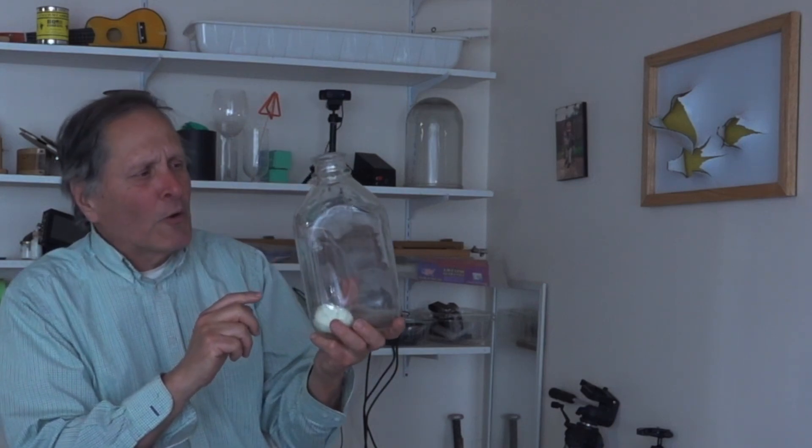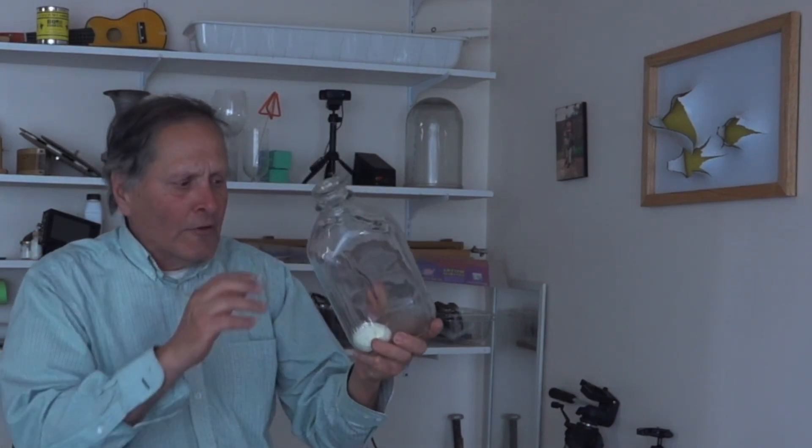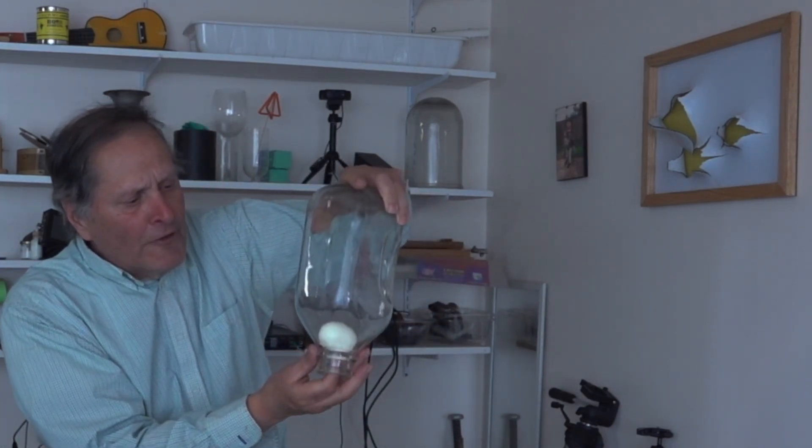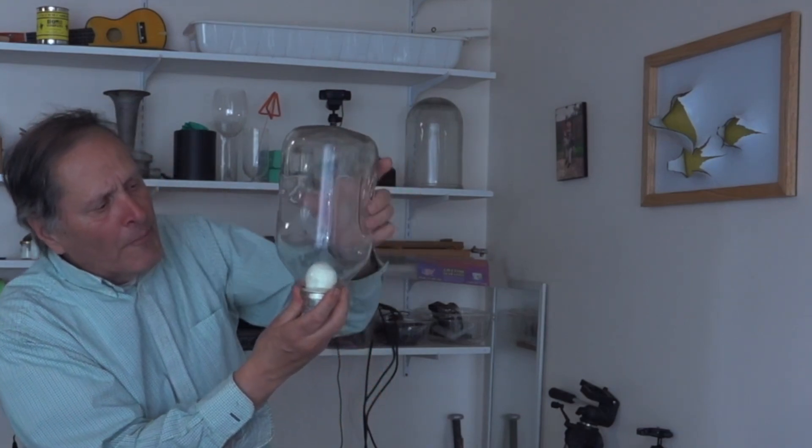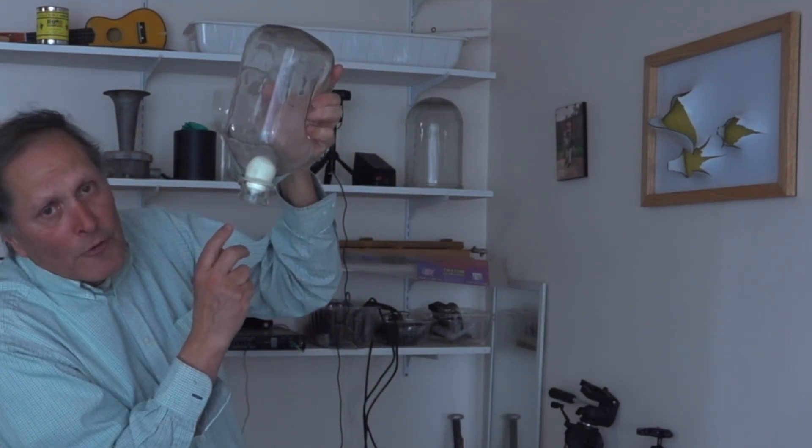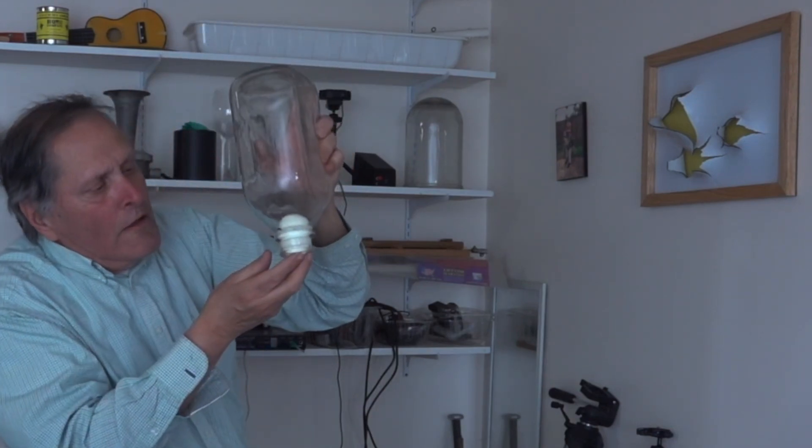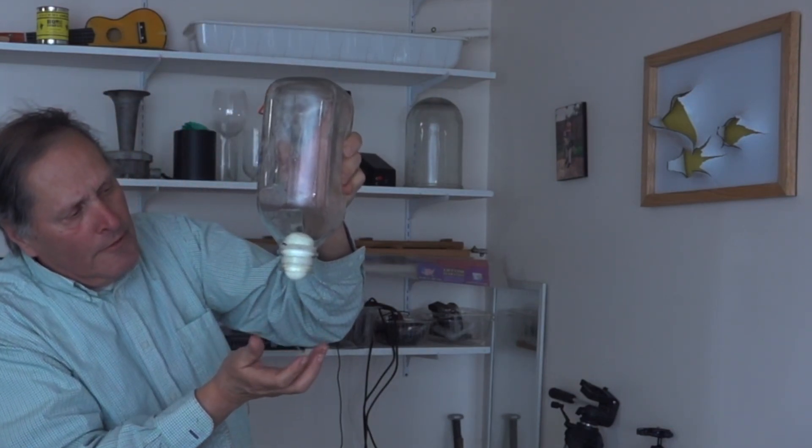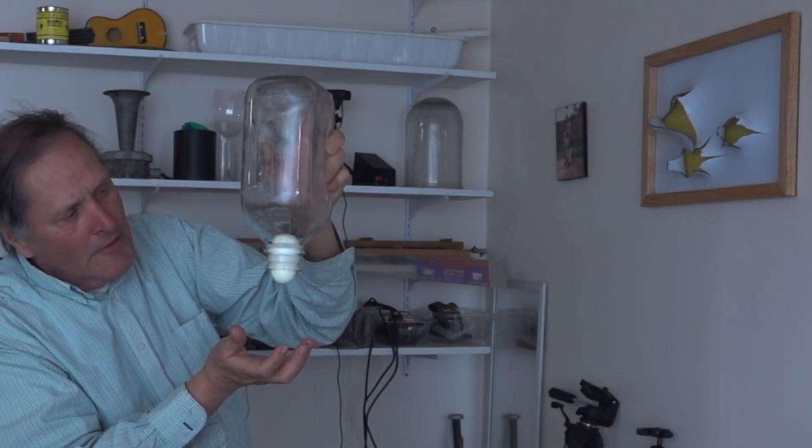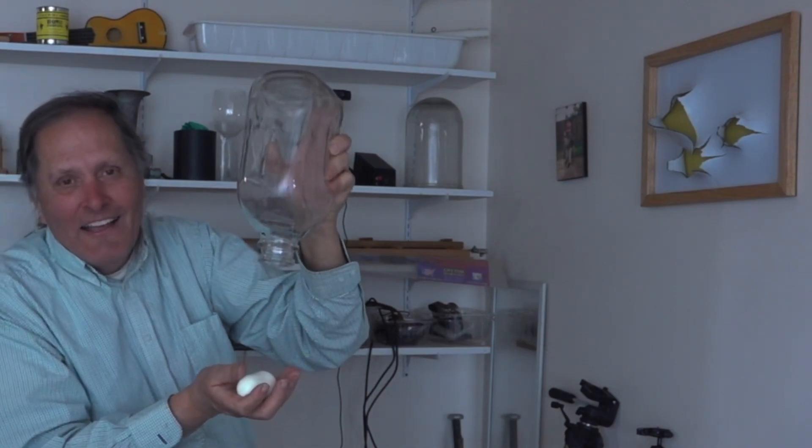Now to get the egg out of the bottle, the first thing I'm going to do is rinse it out to get some of the ash out, but then I'm going to turn it upside down and position the egg right at the mouth, and I'm going to blow into the bottle as hard as I can, and there it is.